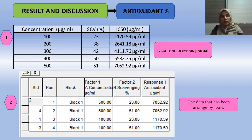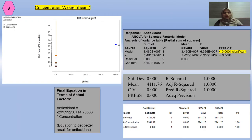Moving to results and discussion for antioxidant percentage: data from previous journals is implemented into DOE. The first factor is concentration (OA), which is significant with a value less than 0.5. From this, an equation can be created to obtain the best antioxidant value.